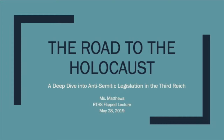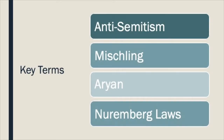We are going to take a look at some of that legislation and trace how it directly impacts the Holocaust. Some of the key terms that you're going to want to look for in this video are anti-Semitism, Mischling, Aryan, and Nuremberg Laws. Those key terms will be highlighted in purple throughout this presentation.